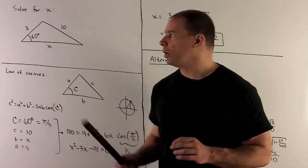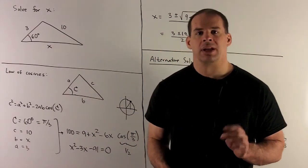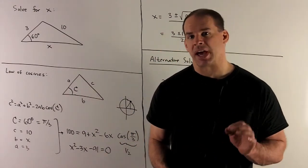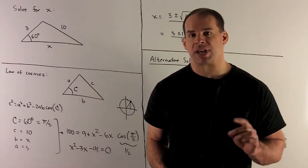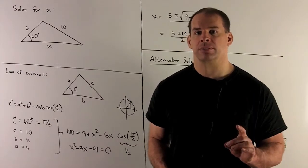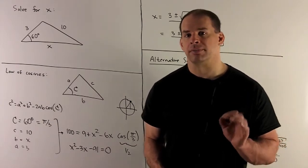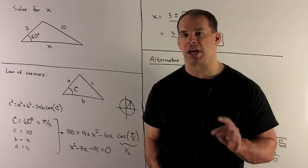We'll have one angle of 60 degrees, the length of the opposite side will be 10, and the lengths of the other sides will be 3 and x. For the first solution, we're going to use the law of cosines.